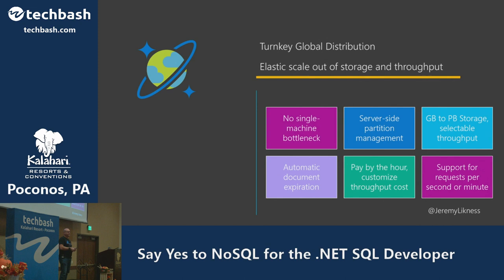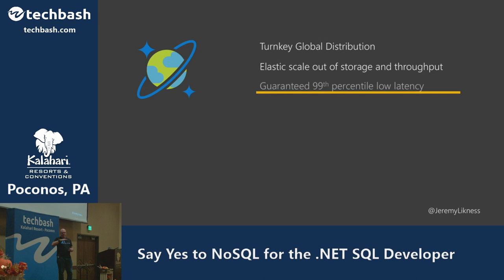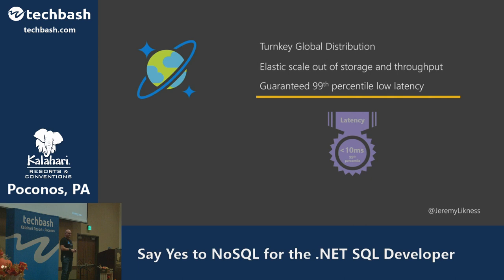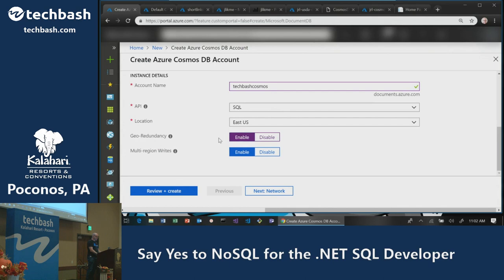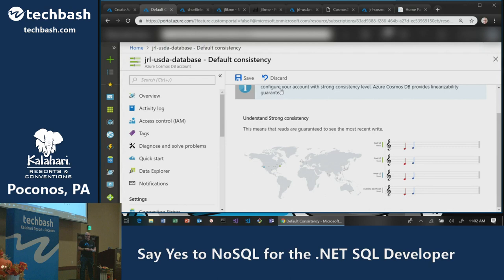You can set a time-to-live on a document — no more writing jobs to periodically purge records. Stamp the record and it auto-expires. There's guaranteed low latency and five well-defined consistency models. Because you have a distributed database, if you want strong consistency where everyone who writes or reads sees the exact same thing, all data on a write has to replicate across the globe — there's network latency, so this takes time, is expensive to maintain, and lowers availability.